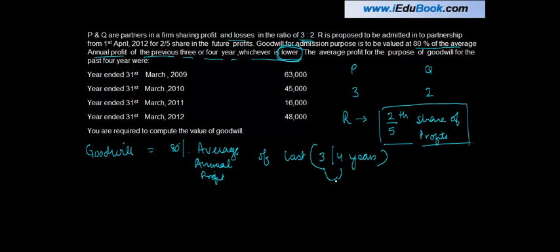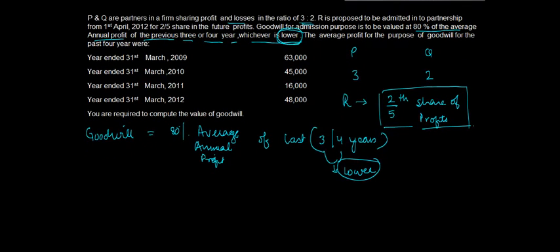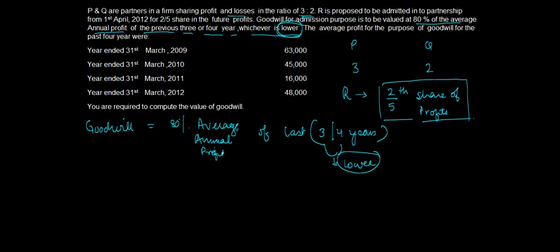Whichever is lower out of these two. So basically what is happening here, you first need to calculate what are the average profits for the last three or four years. For the purpose of computing your average profits, the profits of the last four years are given. You're required to compute the value of goodwill.